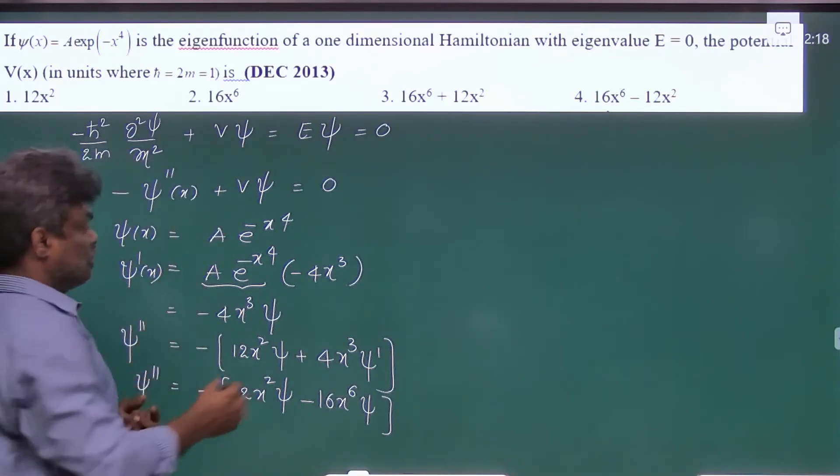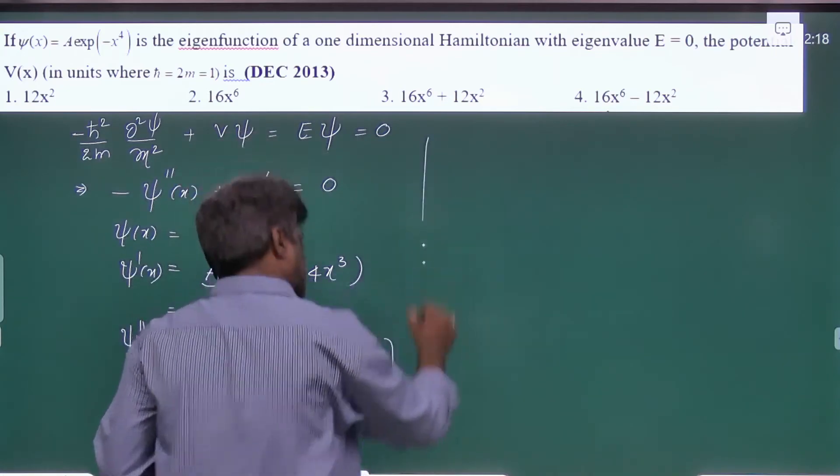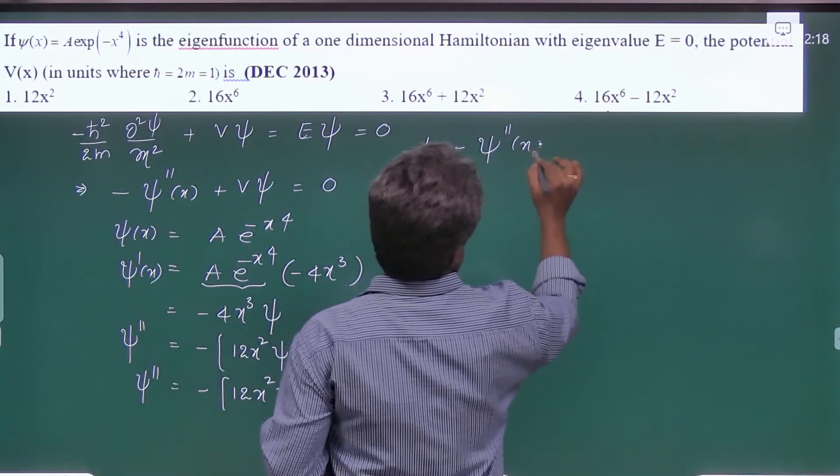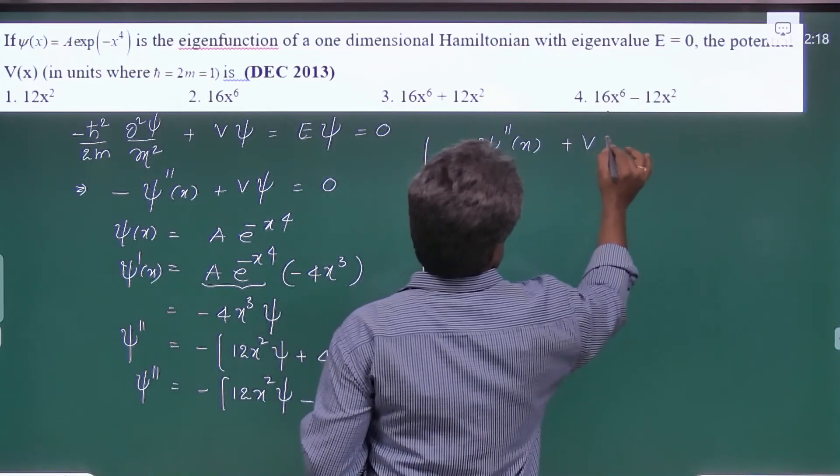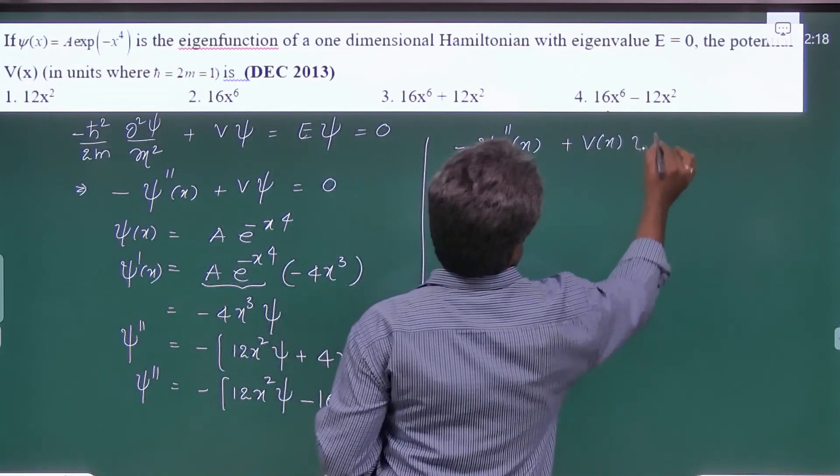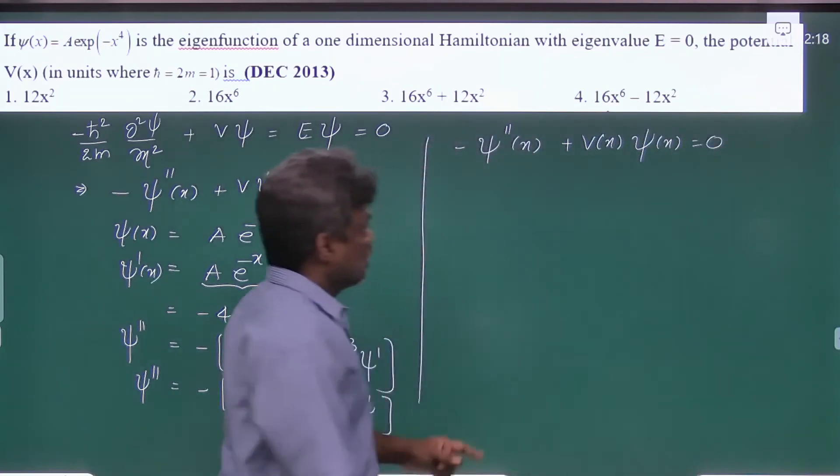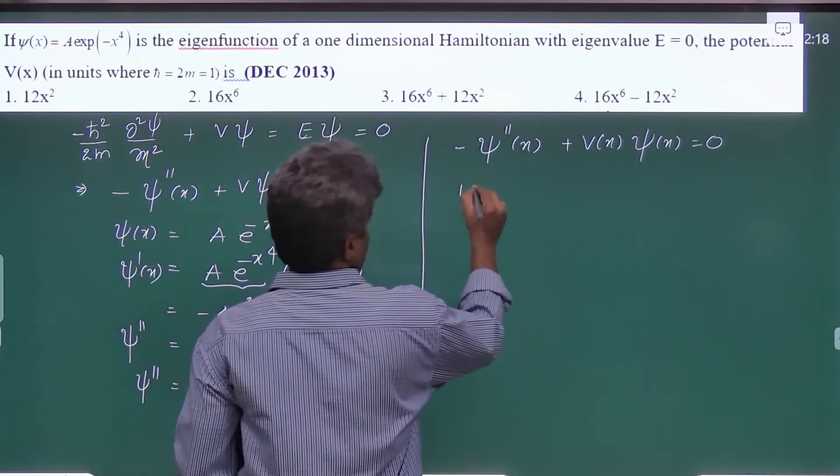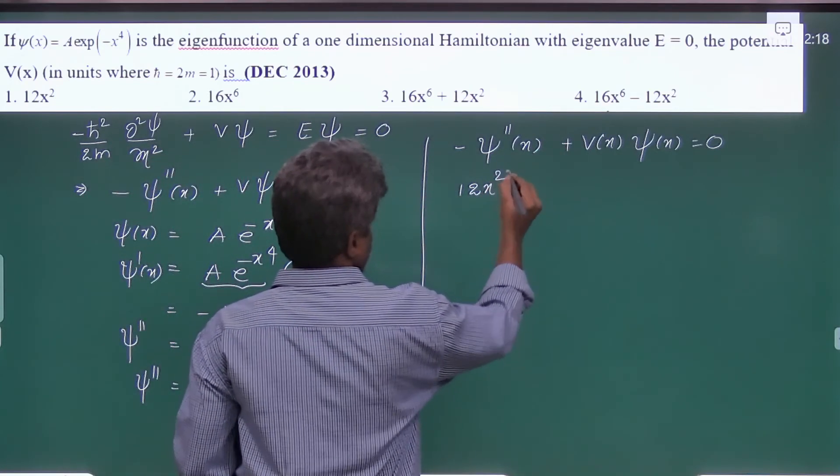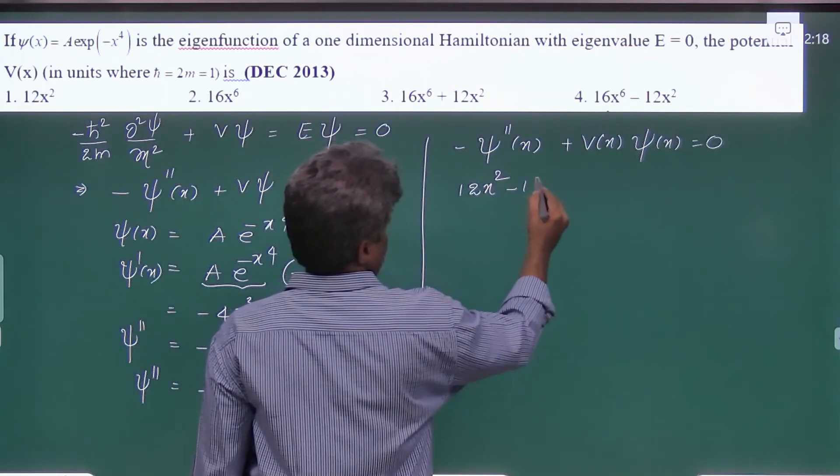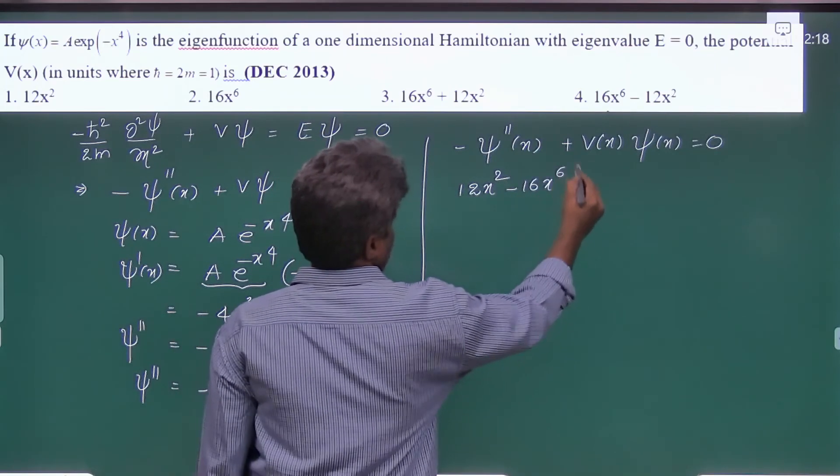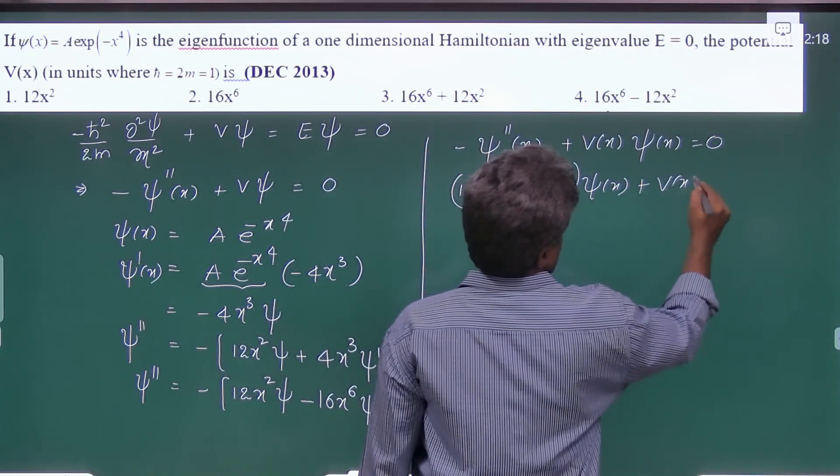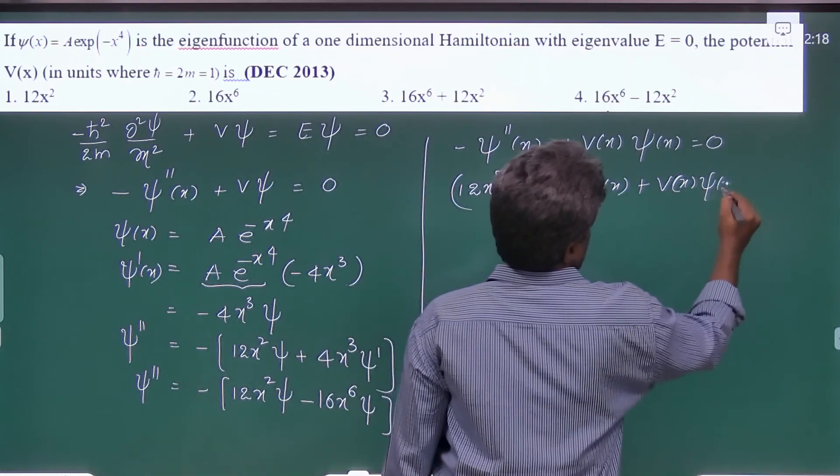This is your second derivative. Just take it and substitute into the equation: -ψ''(x) + V(x)ψ(x) = 0. Taking ψ'' and substituting, we get 12x² - 16x⁶ψ(x) + V(x)ψ(x) = 0.